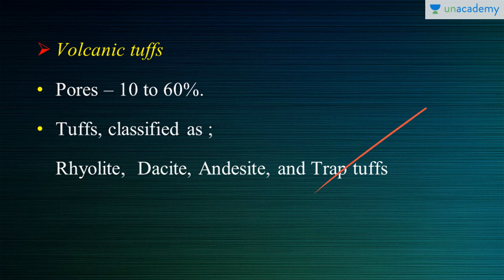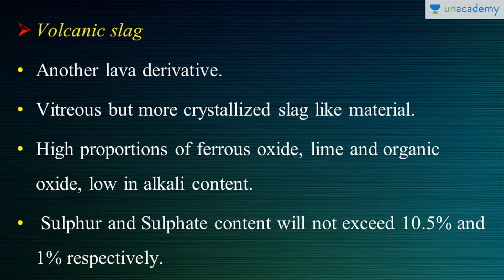Now let's move on to the next one: volcanic slag. This is another derivative from volcanic lava itself — hence another lava derivative. Just like the volcanic tuffs, slag is also vitreous in nature, but they are more crystallized, slag-like material. Vitreous means glassy-like — glass-like properties and glass-like appearance. But they are not amorphous; they are more crystallized, with more defined structures.